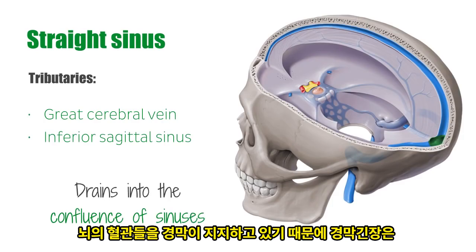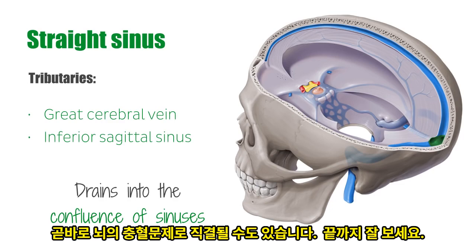The confluence of sinuses, shown in green, is formed by the confluence, or joining, of the straight sinus, the superior sagittal sinus, and the occipital sinus.